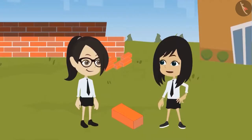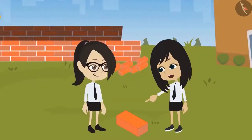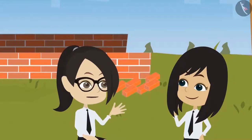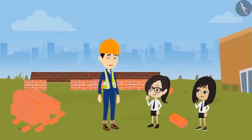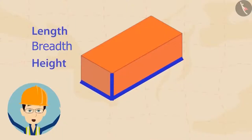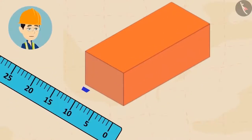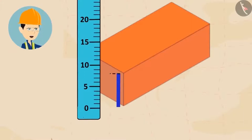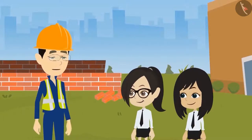There is one point to be noted about the faces and edges — did you notice all the faces and edges are straight? To measure a brick, we measure its length, breadth, and height. The length of this brick is 21 cm, breadth is 10 cm, and height is 8 cm. You can find bricks of different sizes, but for our construction we are currently using bricks of this measurement.